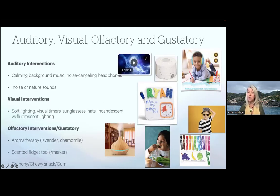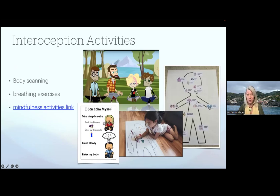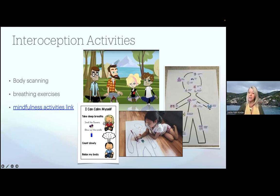Touching on the four other domains — auditory, visual, olfactory, and gustatory — in schools we tend to use input options for these more as environmental modifications or adaptations for the student. And then examples of interoception activities: there are whole curriculums available for developing interoceptive awareness, but examples can be using body scanning, body mapping, teaching and using breathing exercises or calming routines, and mindfulness activities. There is a link with some examples on the PDF version of the slides.